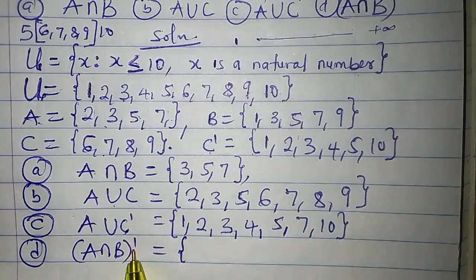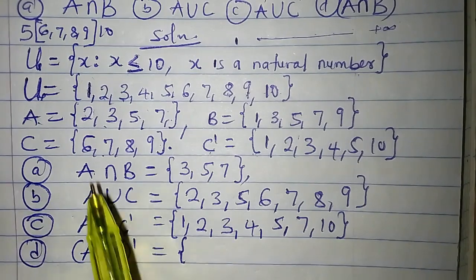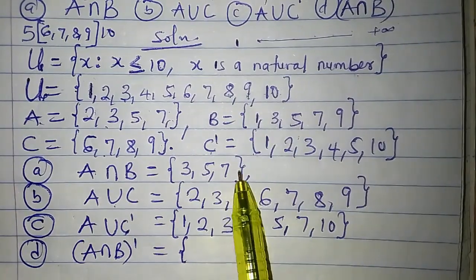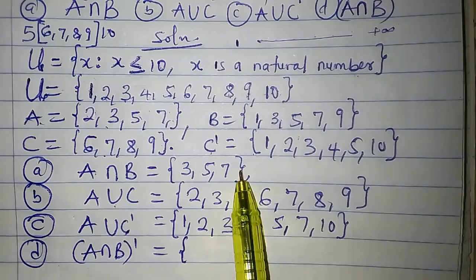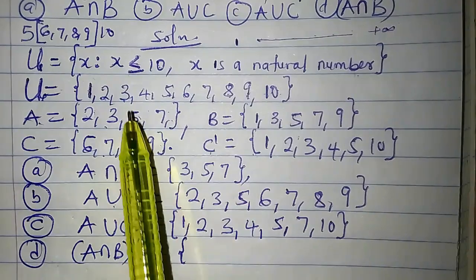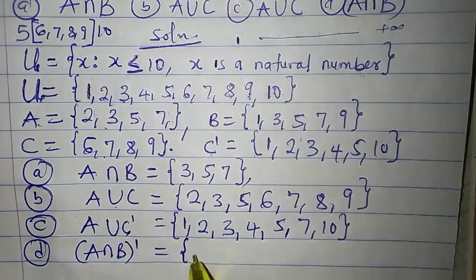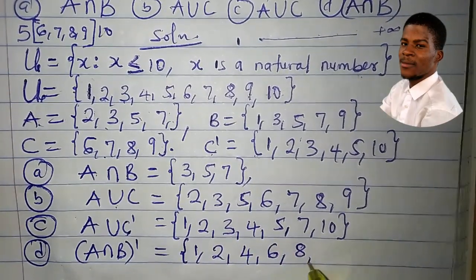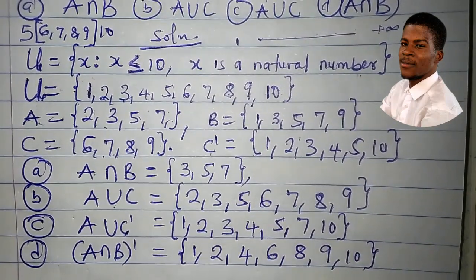The last one is A intersection B complement. A intersection B complement is the set of all elements in the universal set that are not in A intersection B. A intersection B has {3, 5, 7}. Removing 3, 5, and 7 from the universal set, we have 1, 2, 4, 6, 8, 9, and 10. So A intersection B complement is {1, 2, 4, 6, 8, 9, 10}.